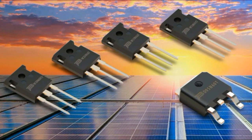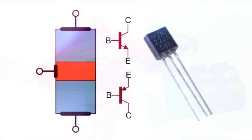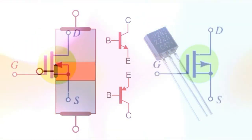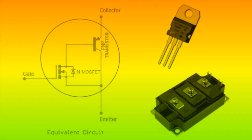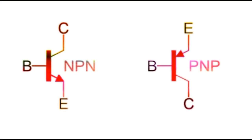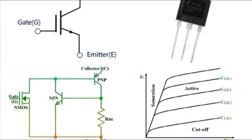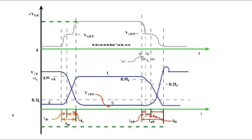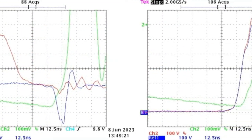The Insulated Gate Bipolar Transistor, or IGBT for short, is a semiconductor device that has a function between a bipolar junction transistor, BJT, and a field effect transistor, MOSFET. The IGBT combines the best parts of both BJT and MOSFET in its structure. The large input impedance and high switching speed of the MOSFET and the low saturation voltage of the BJT combine to create the IGBT, which is capable of operating at high values of collector-emitter current with almost zero gate voltage.